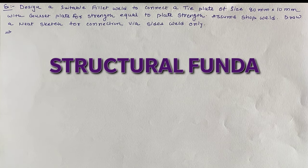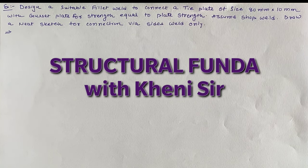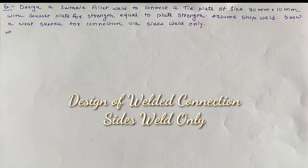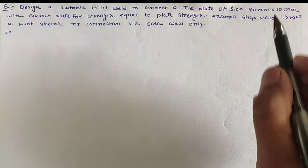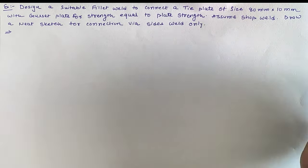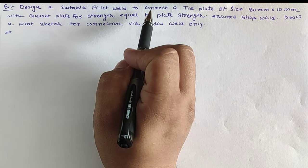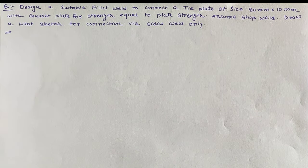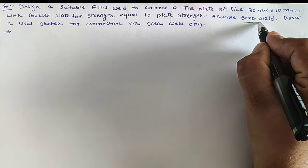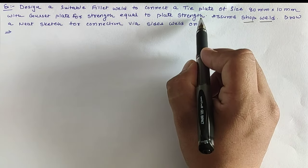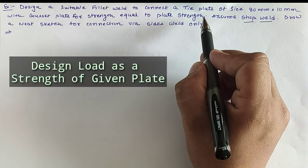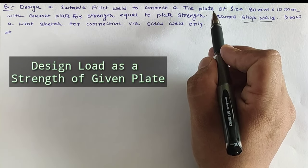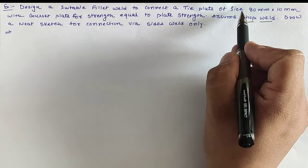Hello friends, welcome back to my YouTube channel Structural Funda. I'm Ethan Kenny. Today we are going to learn about the design of a given rectangular plate of size 80mm x 10mm with the plate having a fillet weld. We have given that the shear strength is equal to the plate strength, which means we have to design the connection using the plate strength.